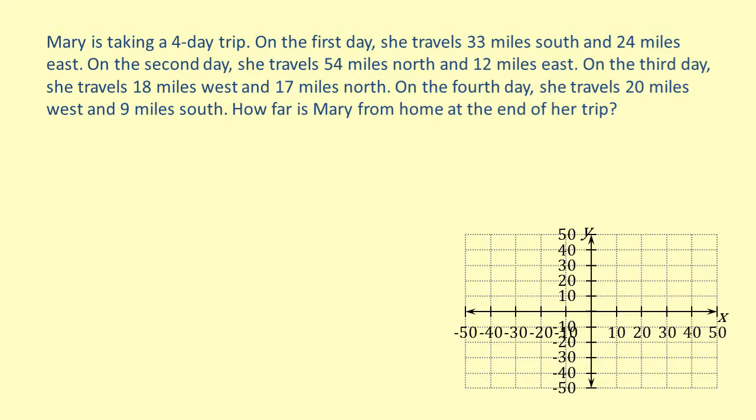On the first day, Mary travels 33 miles south and 24 miles east. So we need to move in the positive x-direction and the negative y-direction. Our first vector, then, is 24, -33, and we'll call it v1. We can see on the graph that the vector points down and to the right.